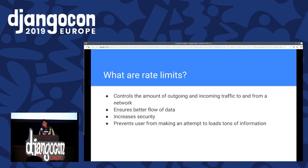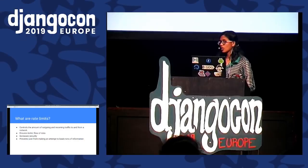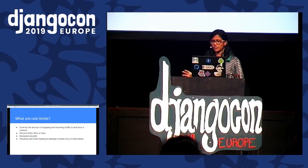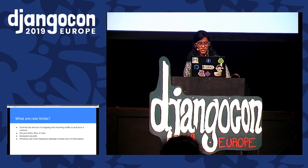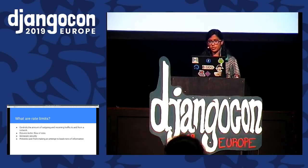I mentioned fetching data without hitting rate limits, so I need to cover what rate limits are. Rate limits refer to the amount of traffic — outgoing and incoming — to a particular network or API. GitHub API has 5,000 requests per minute, and Twitter API has 60 requests per minute.